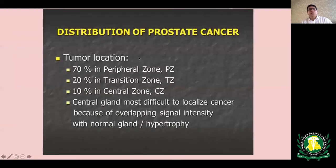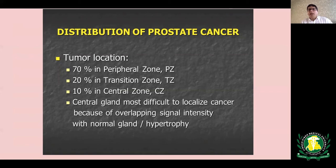The distribution of prostate cancer is important to know. 70% of cancers arise in the peripheral zone, 20% in the transitional zone, and 10% in the central zone. The central zone is a tricky area to detect cancer because it's a small part of the gland — it often gets compressed by hypertrophy of the central portion, causing a lot of signal overlap, making it trickier to detect cancer there.